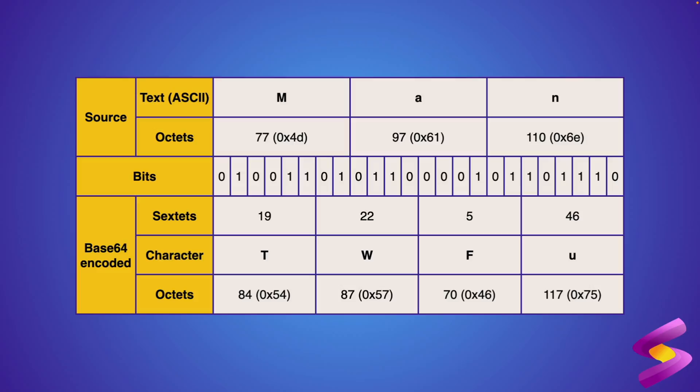Base64 is called Base64 because it takes up four bytes of six bits. In this example we've written out 'man' — using ASCII that translates into the bits you can see underneath it. So 'M' becomes 01001101 and so on. The letters 'man' get encoded to 'TWFu'. It becomes four letters instead of three because normal ASCII uses eight bits per letter, while Base64 uses six bits in sets of four.